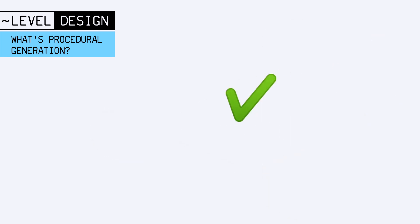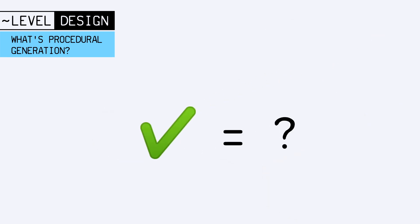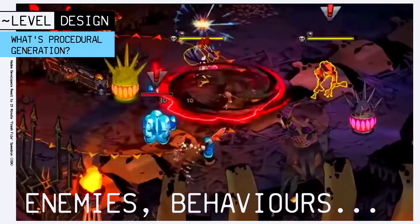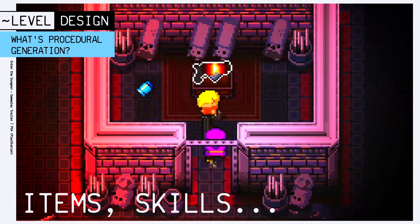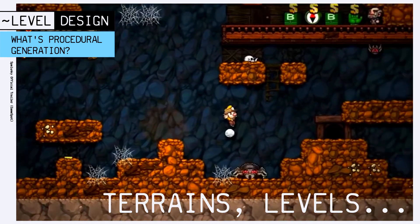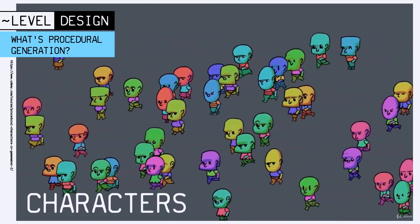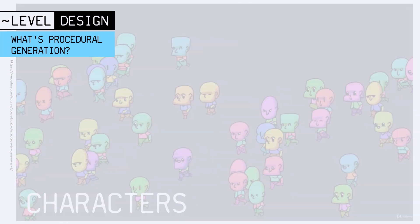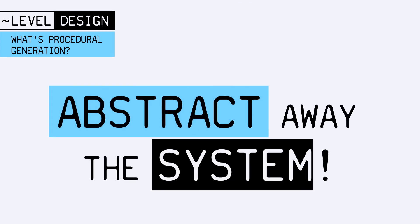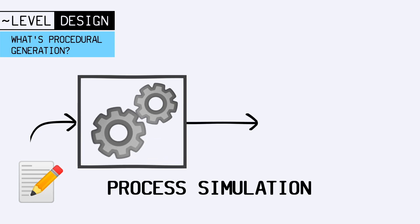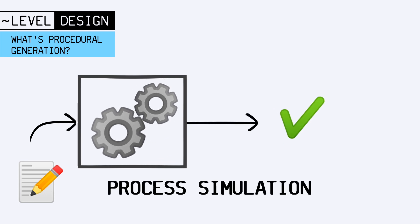What you call viable is up to you, and procedural generation can be applied to lots of areas of game creation: asset creation, animations, enemy behavior simulation, power-ups or skills, terrains and levels, music, quests and storylines, character skins, and more. The idea is always to abstract away the system you want to automate, then code up a machine capable of simulating this process to give you logical and usable results.